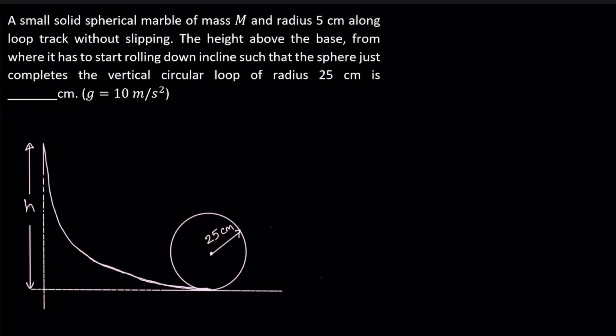A small solid spherical marble of mass m and radius 5 centimeters rolls down a loop track. There is a circular loop preceded by a curved surface. We are asked to find the height from where it should come down rolling so that it completes a vertical circular loop of radius 25 centimeters.